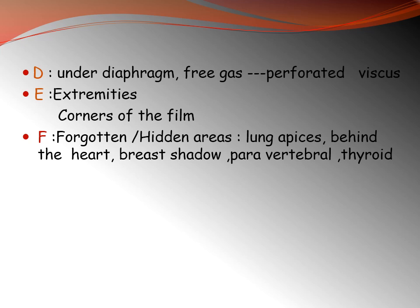E is for extremities — the corners of the film — for any abnormality. And F is the king: forgotten or hidden areas, the areas we usually forget to look at. Unfortunately, a lot of abnormalities can be detected within these areas, such as the lung apices, the region behind the heart overlying lung parenchyma, and breast shadows. In many cases, we may get a totally normal plain x-ray, but there may be abnormal density or abnormal soft tissue in the breast, and the patient could fortunately be diagnosed with early-stage breast cancer just from the plain x-ray. Also check the paravertebral region and thyroid.